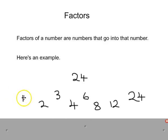We can get to 24 by 1 times 24, 2 times 12, 3 times 8, and 4 times 6. So 1, 2, 3, 4, 6, 8, 12, 24 - these are the factors of 24. If you're a bit shaky on times tables, then